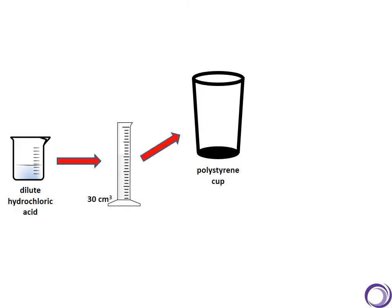Let's talk through the practical. What do we do? Well, we initially take some dilute hydrochloric acid which we measure using a measuring cylinder, and we put it in a polystyrene cup. We use a polystyrene cup rather than a glass beaker because this will limit the amount of heat that can transfer to the surroundings.